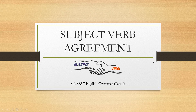Hello dear students, I hope you all are fine. Today you are going to learn a very important topic — subject-verb agreement. Subject is a person or thing that is being discussed, described or dealt with, and verb is a word used to describe an action. Subject-verb agreement means the subject and verb must agree in number. Both need to be singular or both need to be plural.